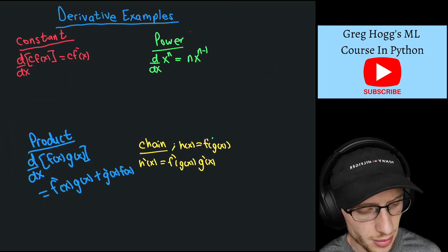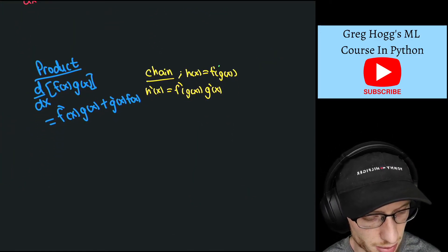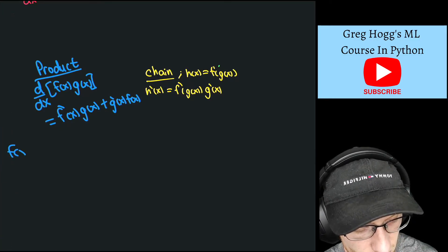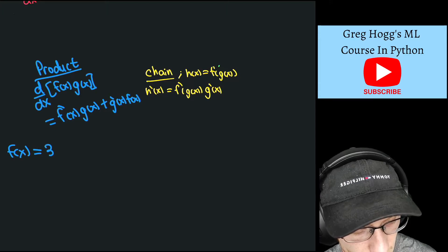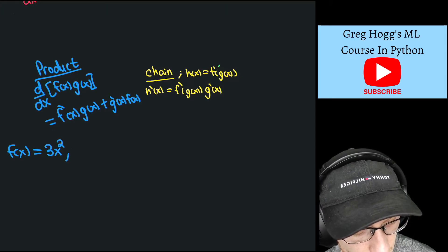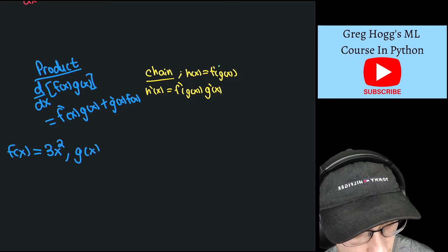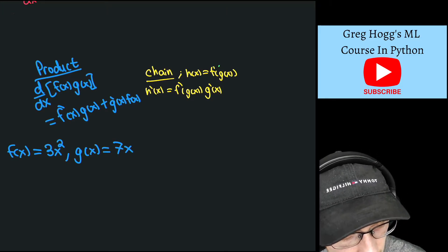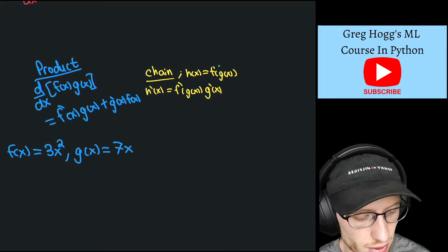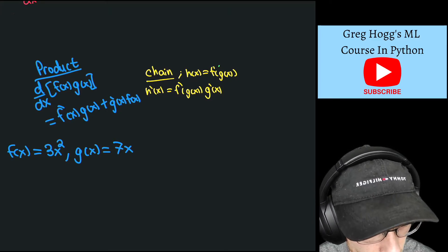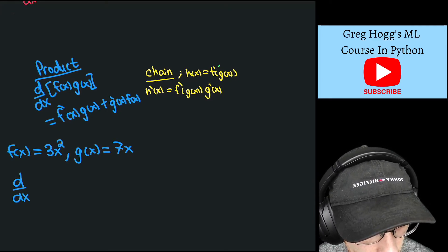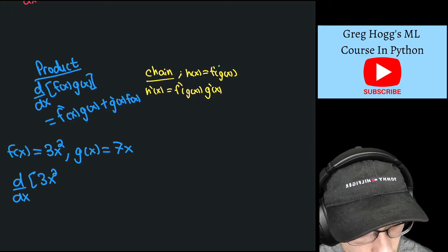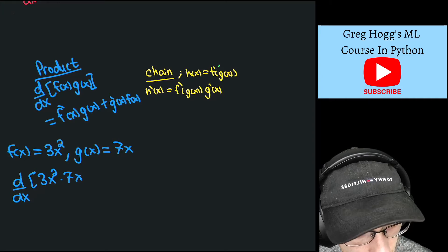Sorry about the jump there. So let me just show you one for the product rule now. So maybe we had f(x), maybe we let f(x) equal 3x squared, and we let g(x) equal 7x. Well, we find that the derivative in question is simply the d/dx of 3x squared times 7x, so that's 3x squared times 7x.